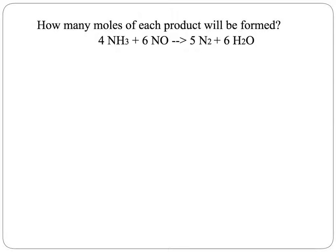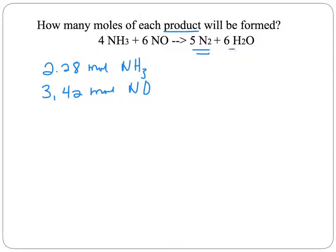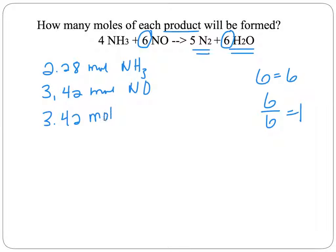The second question with the same reaction asks how many moles of each product will be formed. We had 2.28 moles of ammonia and calculated that we need 3.42 moles of nitrogen monoxide. Notice the mole ratio between nitrogen monoxide and water is 6 to 6, which equals 1. So we can say right away that we're going to make 3.42 moles of water, because whatever value the nitrogen monoxide has, the water will be the same.